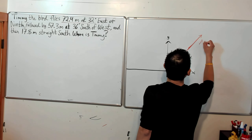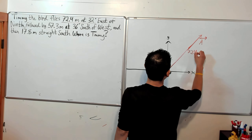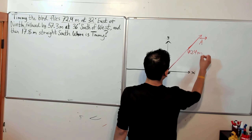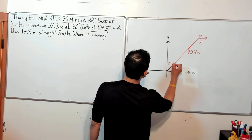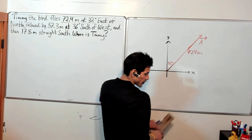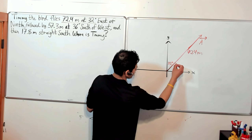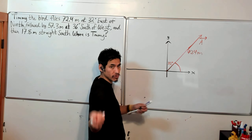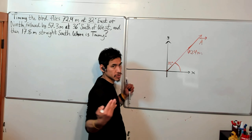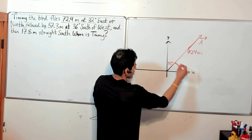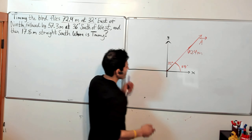Vector A is 72.4 meters and we have an angle here of 32 degrees. Now let's also calculate this other angle because this is going to be the important one we're going to use to find the resultant vector. We use standard positions when dealing with trig functions, so this would be 58 degrees because both of those have to add up to 90.